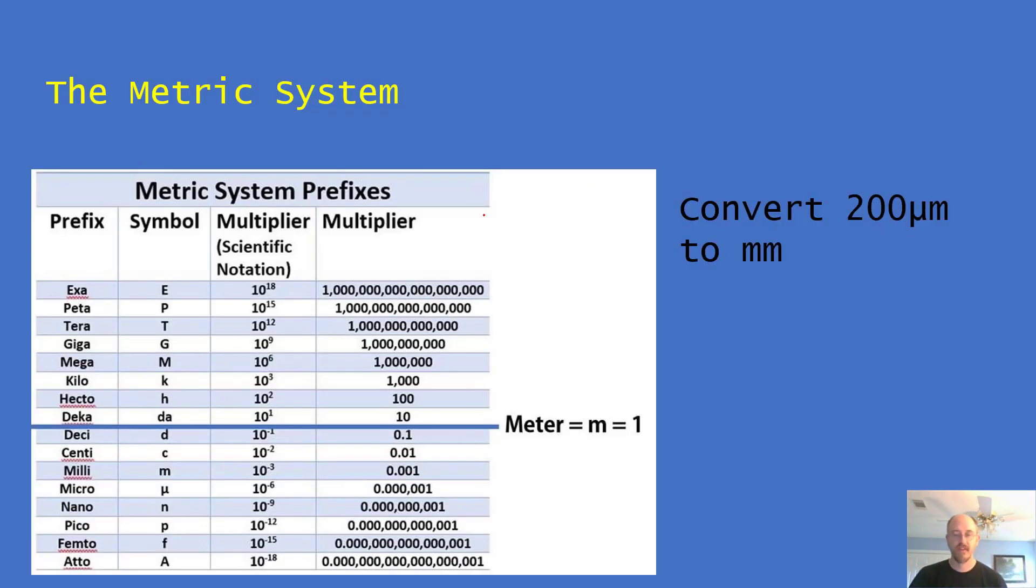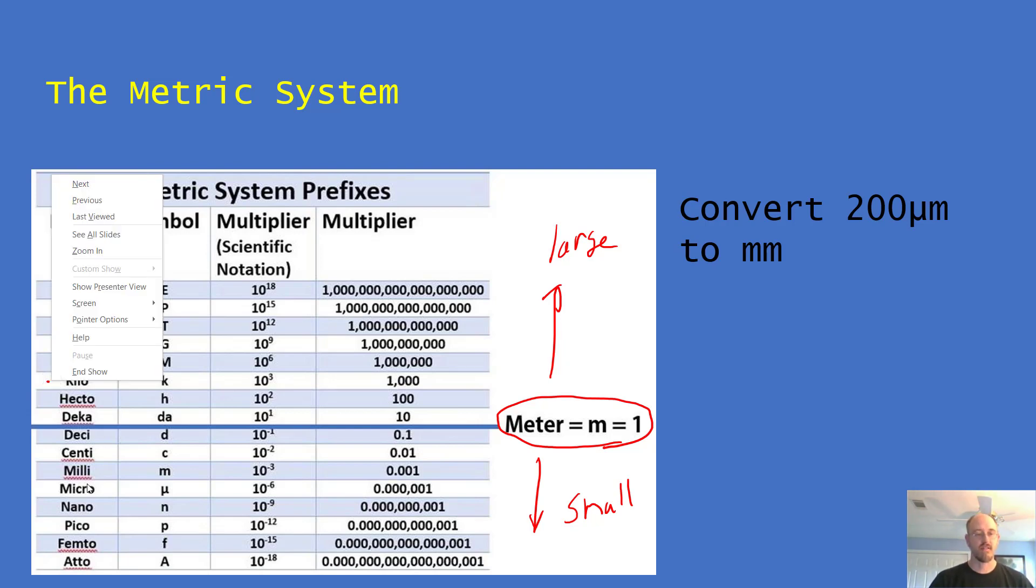When we're measuring things like a cell, or anything in biology really, we're going to be using the metric system. The metric system starts off with a base unit, for example a meter shown here. And we can convert larger by going this way, larger scale, or smaller scales by going down here. And a few of the ones you'll hear about more often are kilo, that's a thousand. So for example, a kilometer is a thousand meters, kilo meter. And that's 10 to the third meters.